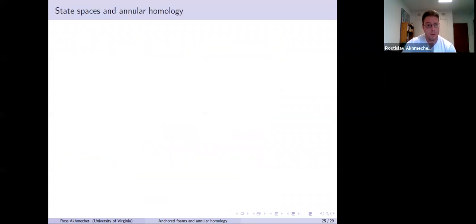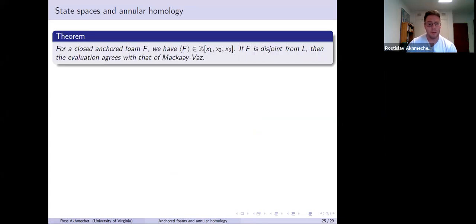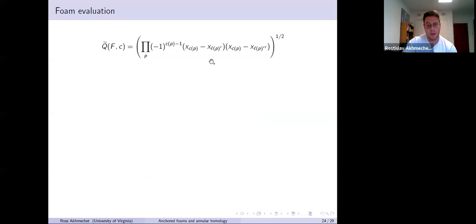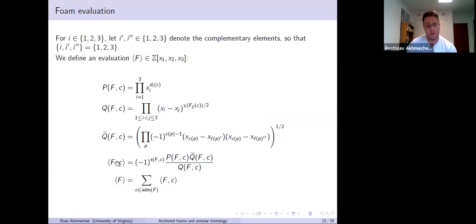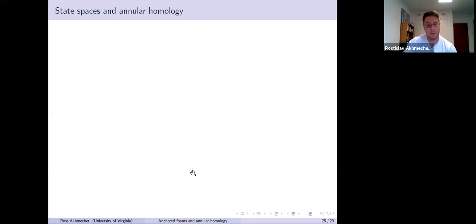That's our evaluation. What do we prove about it? First thing we show is for a closed foam, the evaluation is really a polynomial. So if you look back here for a coloring, you have these denominators, but the evaluation is really a polynomial. If F is disjoint from the line, then this evaluation in terms of colorings is the same as the evaluation given by Mackaay and Vaz in their universal SL3 link homology paper, up to a slight change of variables, just renaming variables.